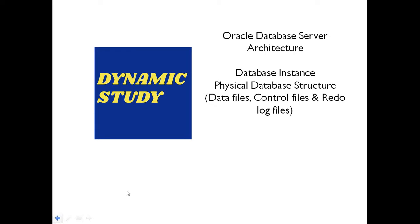Welcome to our second class of Oracle Database Admin tutorial. Today we are going to discuss Oracle Database Server Architecture. It consists of two parts: Oracle Database Instance and Physical Database Structure. Physical database structure contains three things: data files, control files, and log files.